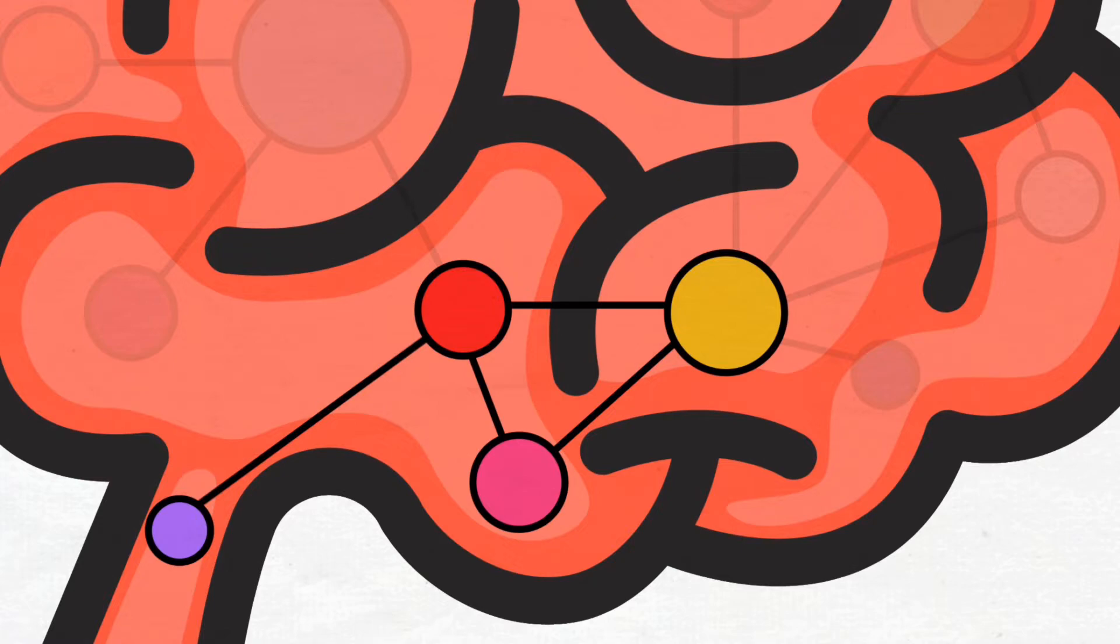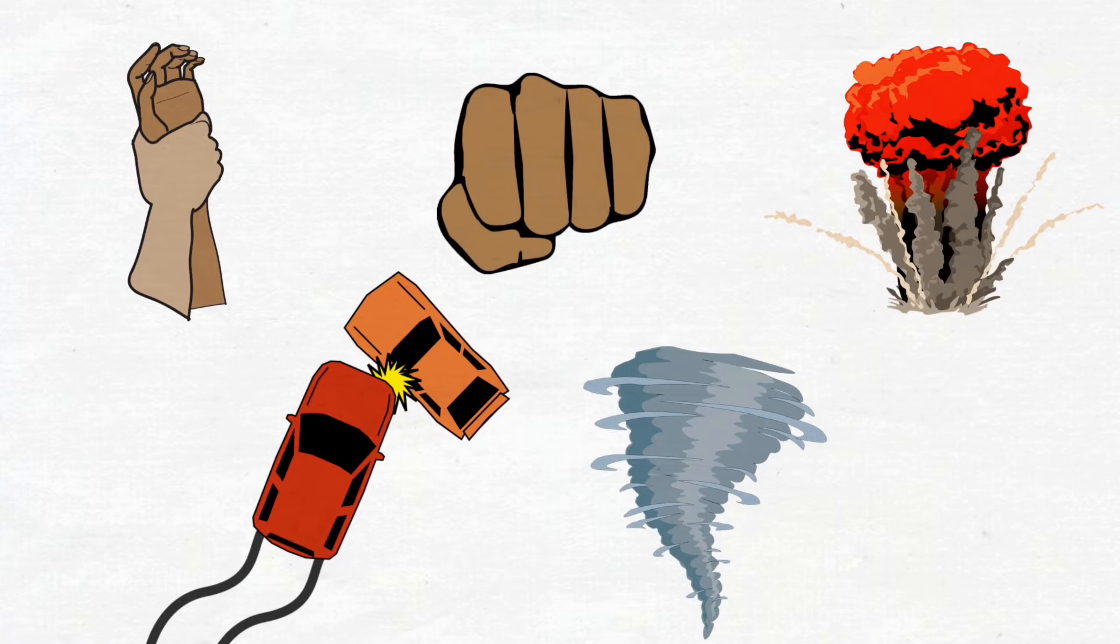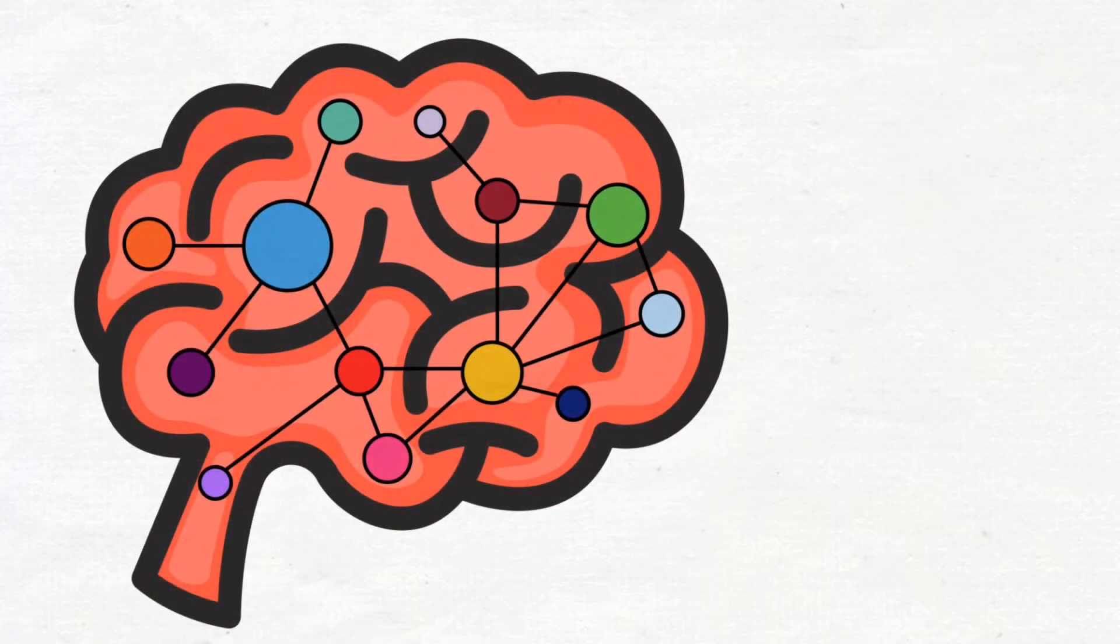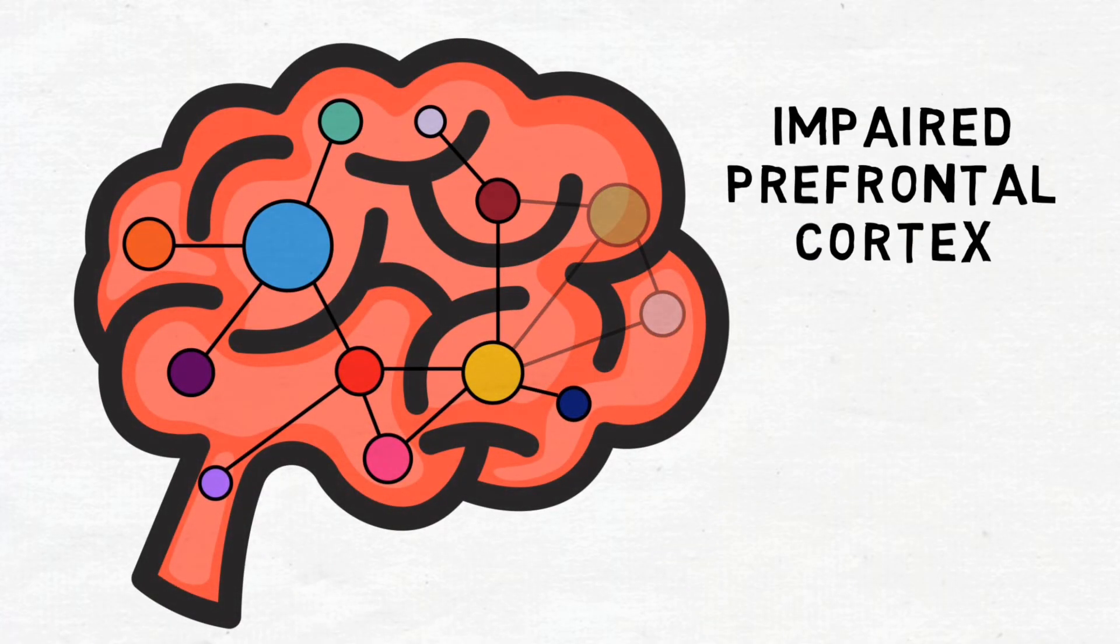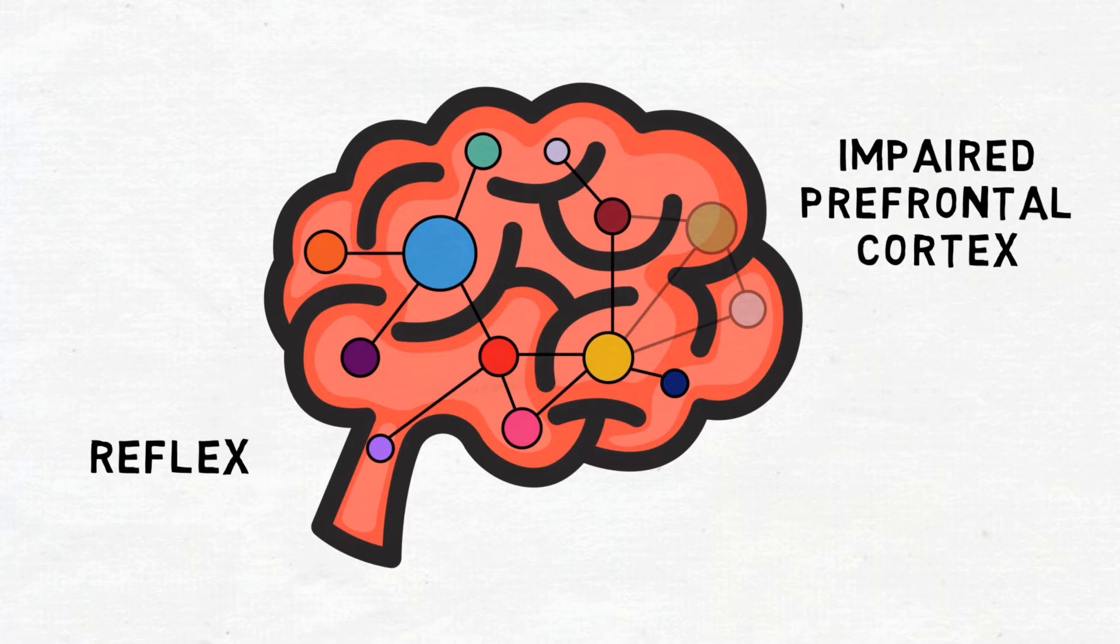In fact, the defense circuitry dominates brain functioning in any high-stress situation. It's the defense circuitry that rapidly impairs the rational parts of the brain and suddenly shifts the brain to reflex and habit behaviors.